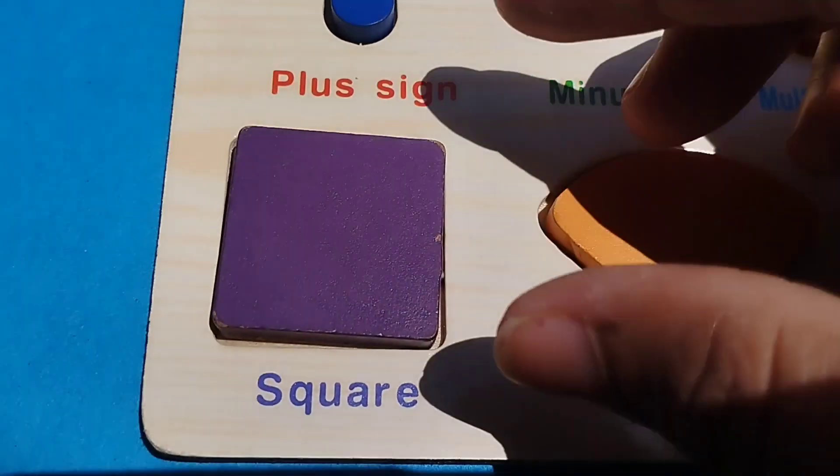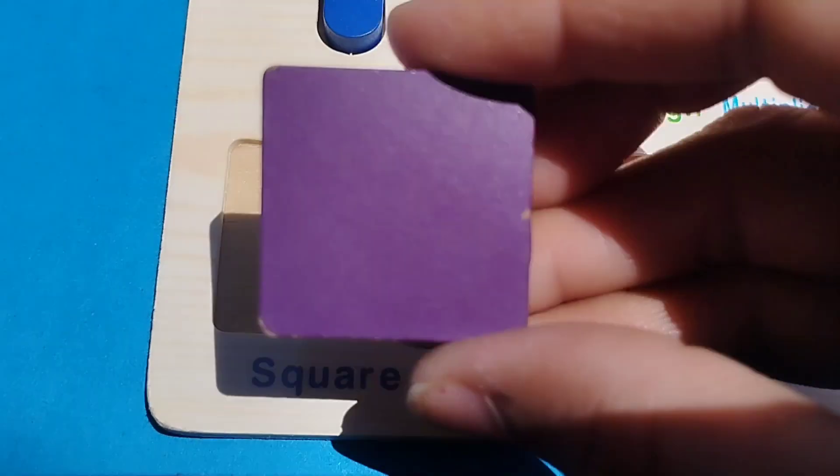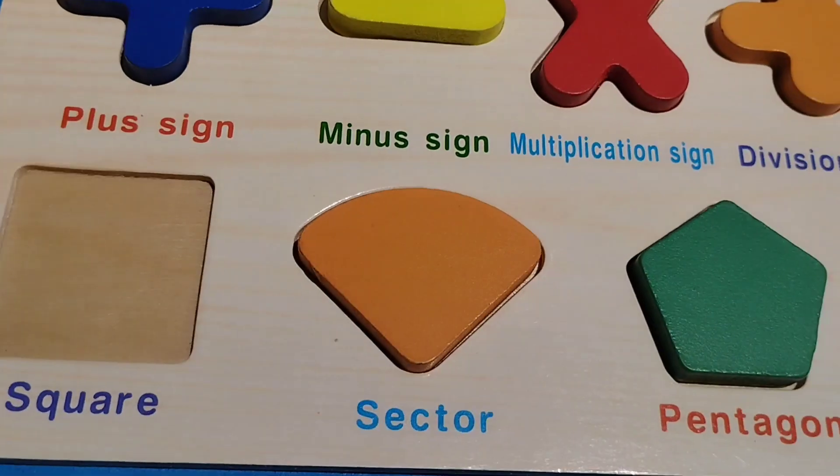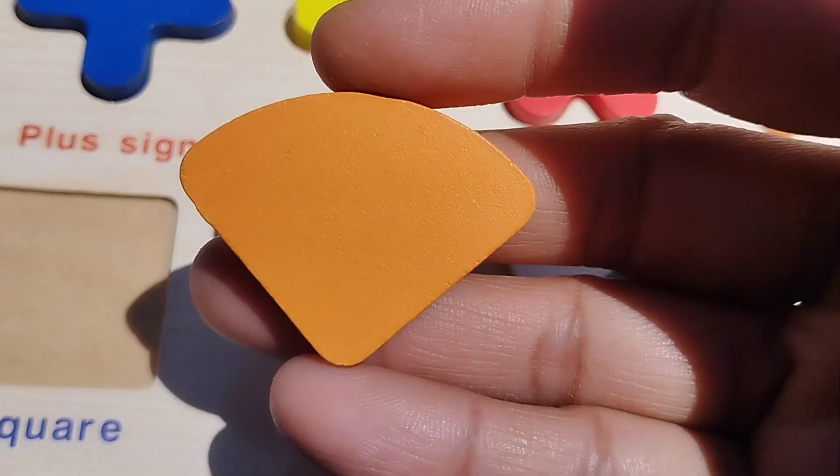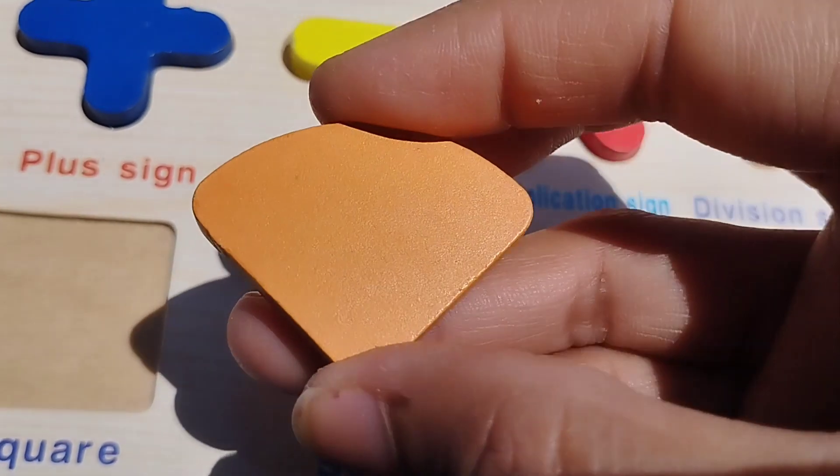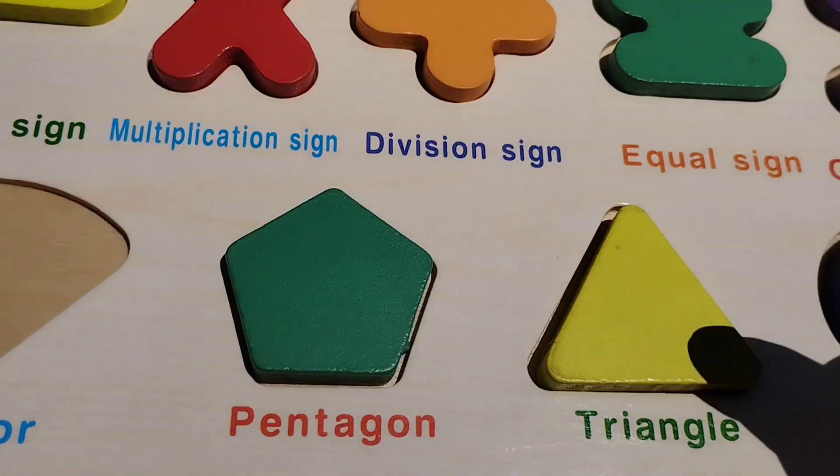Let's learn some shapes' names. The first shape is sector. This is sector shape. Sector.